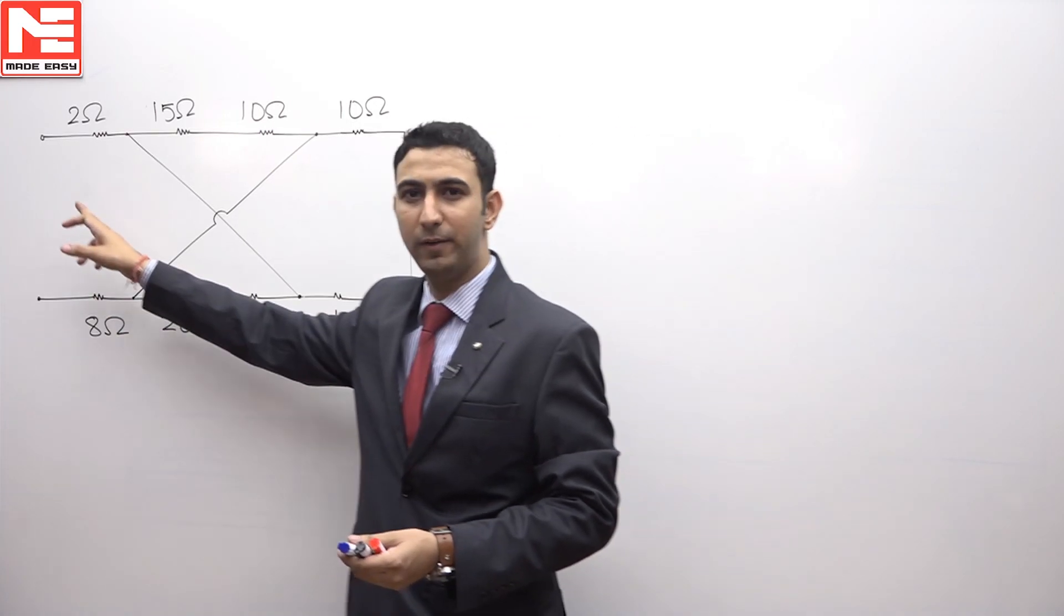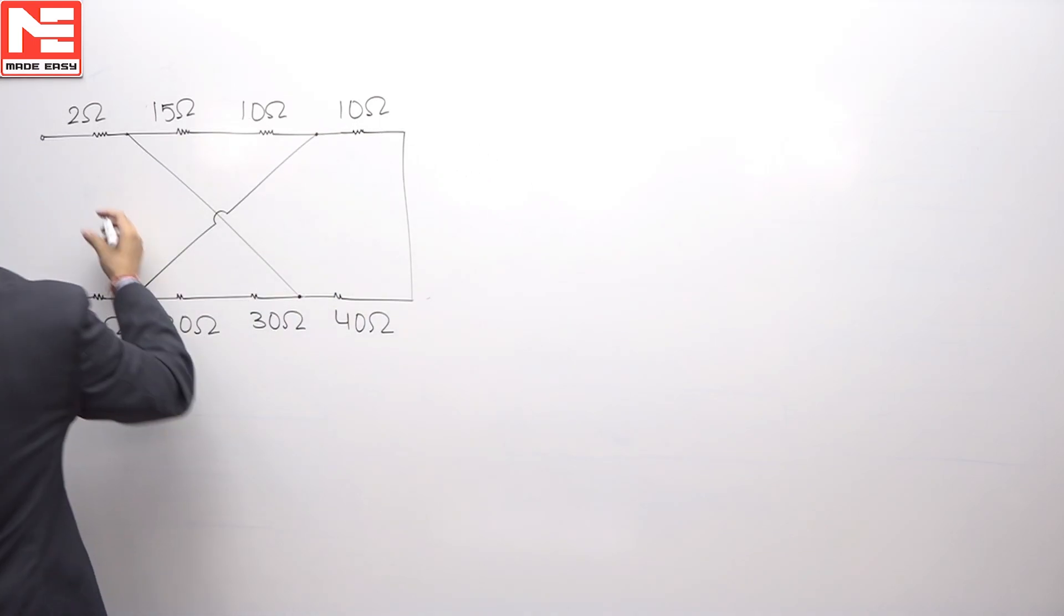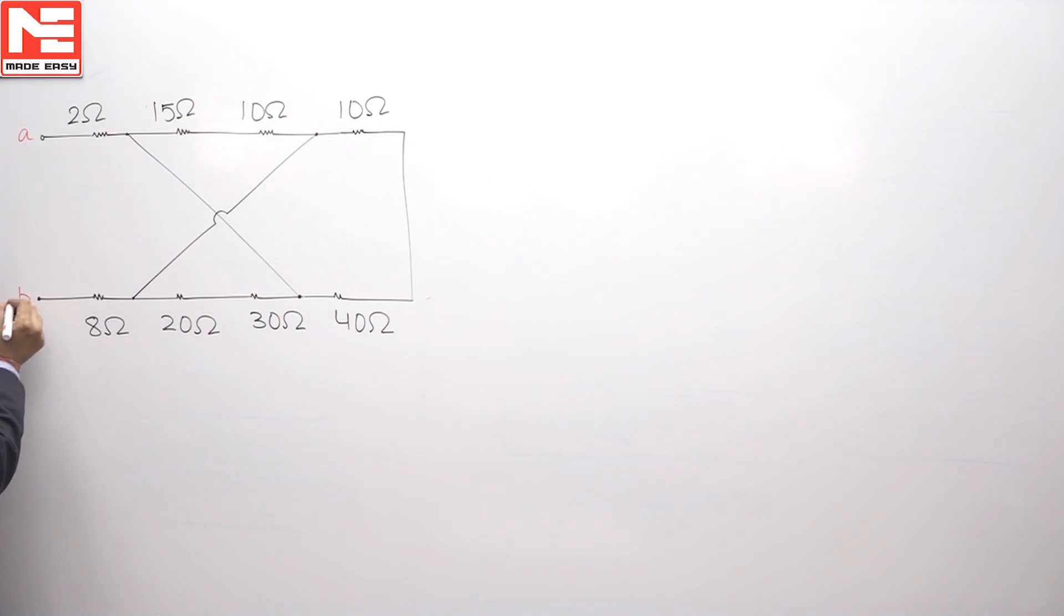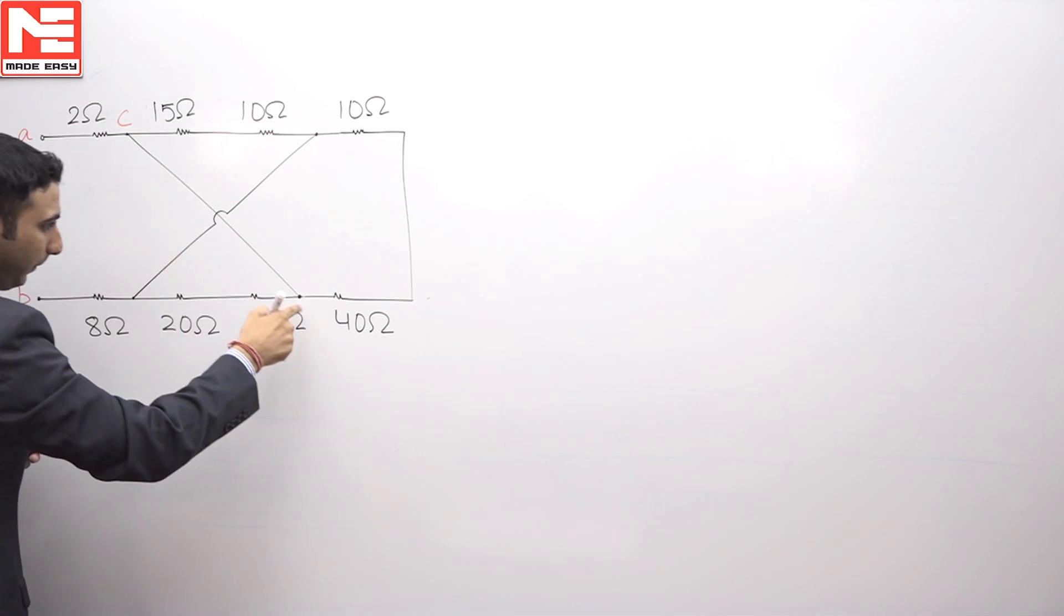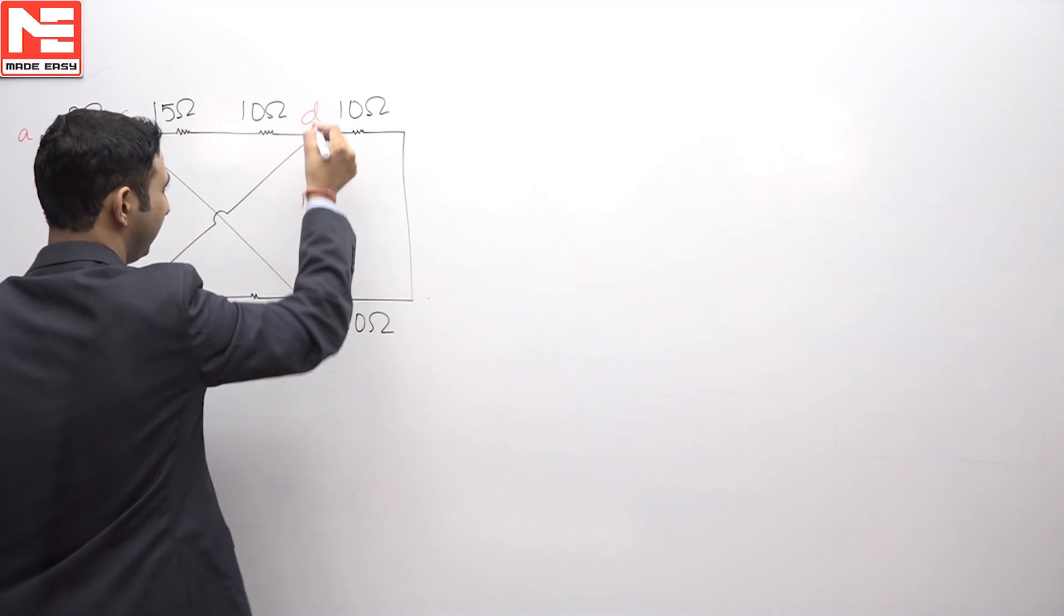In this question, we have to find the equivalent resistance between these two terminals. Let us say this terminal is A and this terminal is B. Suppose this point is C, you see this is the same point C. I am assuming if this point is D, then this is also the same point D.